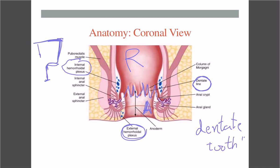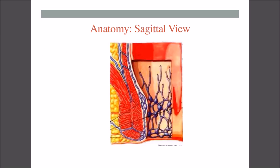Internal hemorrhoids happen in the complex of veins above the dentate line — they get congestion, get large, and can come out of the anus. With external hemorrhoids, the plexus are already out in the anus region below the dentate line, so you're going to be able to see an external hemorrhoid a lot sooner than an internal one.